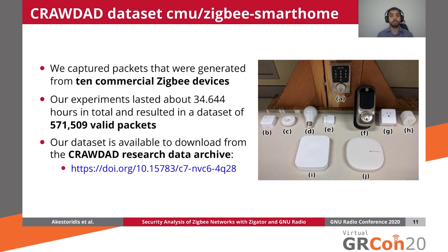For our experiments, we used 10 commercial Zigbee devices to study the traffic that they generated. In particular, we conducted 8 experiments where we varied the Samsung SmartThings Hub used for each experiment, as well as the topology of the devices. From these experiments, we generated a dataset that contains over 500,000 valid packets, and it lasted a little over 34 hours in total. This dataset is publicly available to download from the CRAWDAD research data archive.